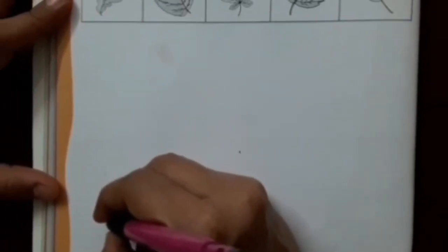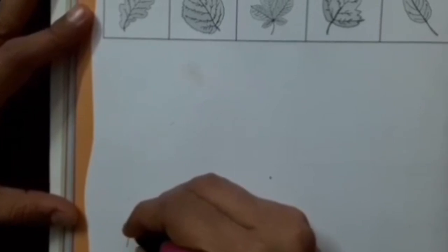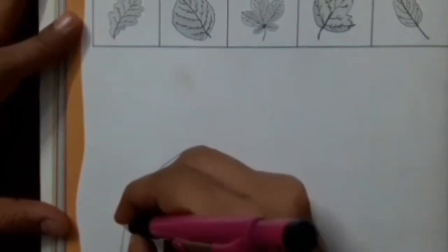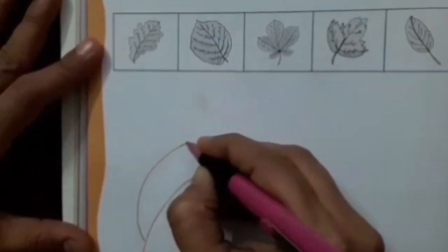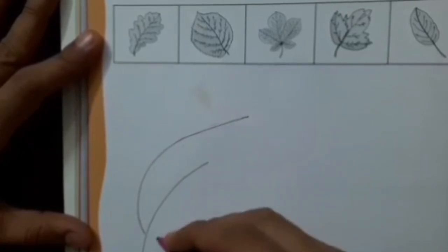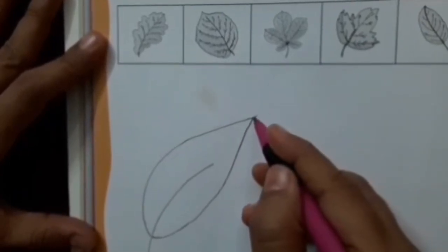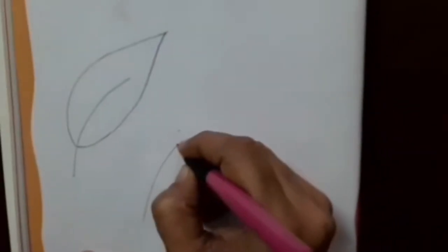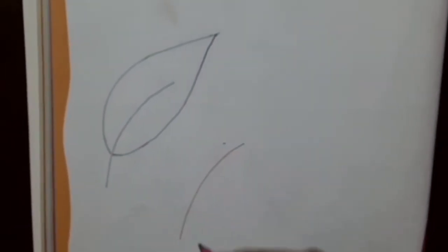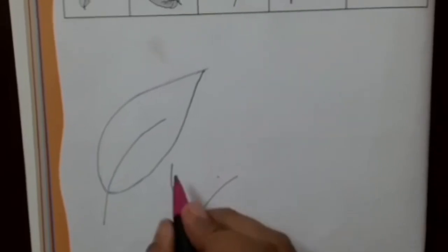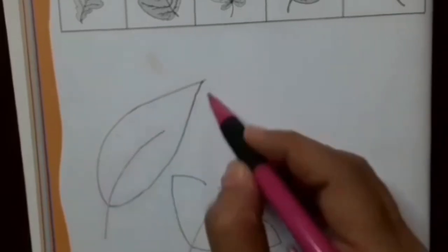Now I am going to draw the first leaf. I have drawn one line, then I will draw one curve, and from here also I will draw one curve, and we will join the edges — this is the first leaf. For the second leaf, I will draw one center line in the middle, then a slanting line up, and from here also a slanting line up, then come inside a little bit, and now draw a curve.